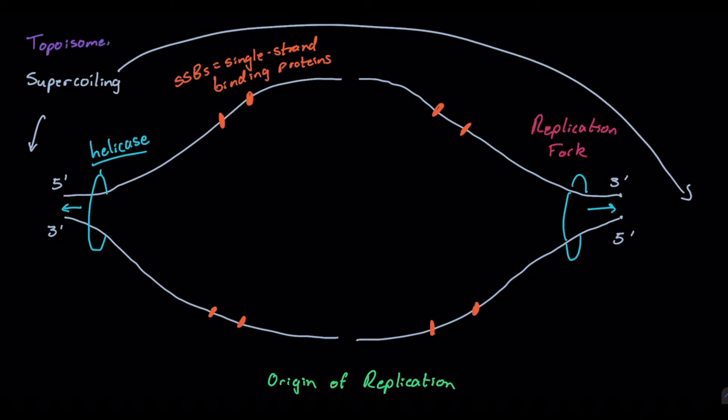That will actually help snip that DNA, relieve the tension, and then reseal that DNA so that supercoiling doesn't end up with any damage in our DNA upstream of those helicases.